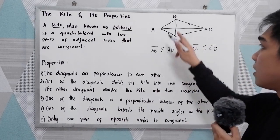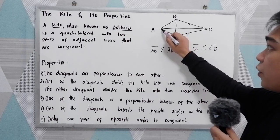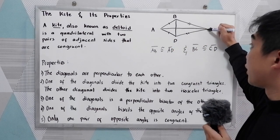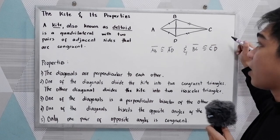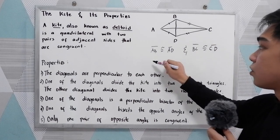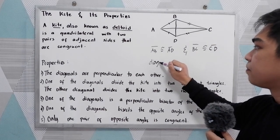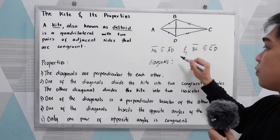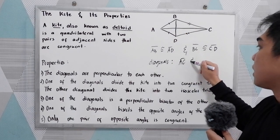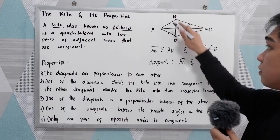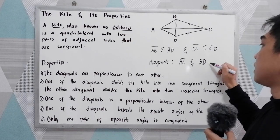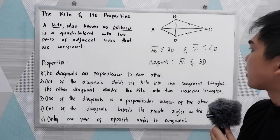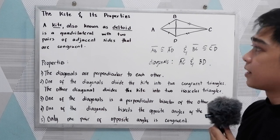In this illustration, if we connect vertex A to vertex C, that will become one diagonal. So the diagonals in this figure are AC and BD. That is the parts of our kite.